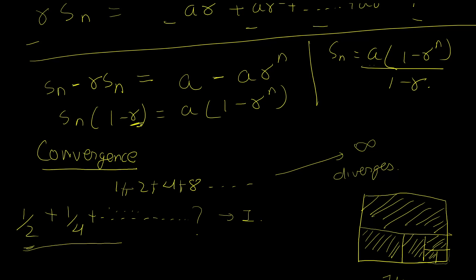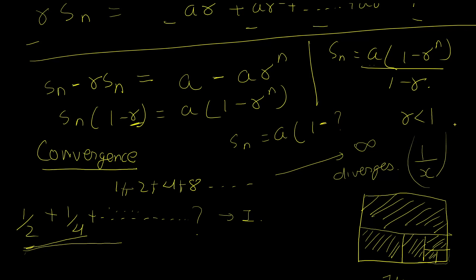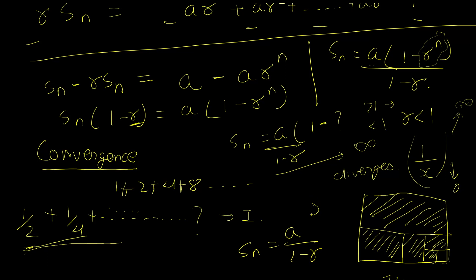Analytically, when r is less than one and we take n to infinity, the term r^n goes to zero — because each successive power of a fraction less than one gets smaller and smaller. That eliminates the r^n factor from the formula, leaving S equals a divided by (1 minus r). This convergence formula applies when r is between zero (inclusive) and one (exclusive); r equal to one does not converge.